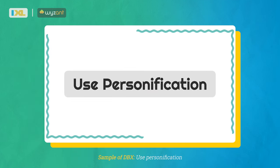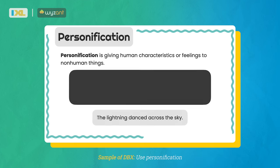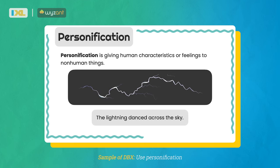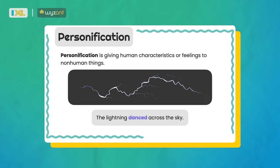Let's learn how to use personification in our writing. The lightning danced across the sky. Notice the verb danced. Lightning can't really dance, right? Only people dance. But when lightning pops and spreads through the sky, the movement can be described as a dance.